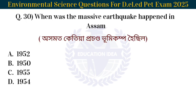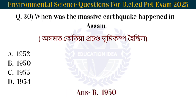Next question: When did the massive earthquake occur in Assam? Aakamat ketiya pasanda bhumikamp houshil. The answer is 1950. The massive earthquake in Assam occurred in 1950.